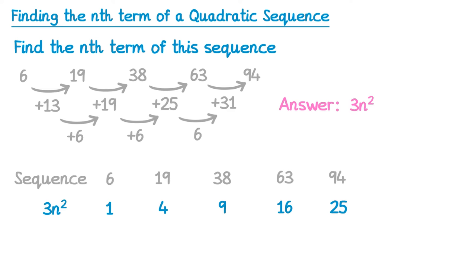So 1 times 3 is 3, 4 times 3 is 12, 9 times 3 is 27, 16 times 3 is 48, and 25 times 3 is 75.